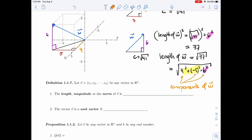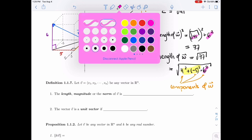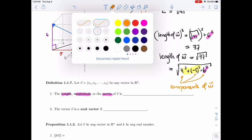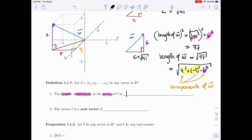If I have a vector V, V1, V2, Vn, any vector in Rn, then the length or the magnitude or the norm, these three words right here are interchangeable. Length, magnitude and norm is going to be, and here's the symbol for it. It's like an absolute value, but a double one. So one line for real numbers, two lines for vectors.